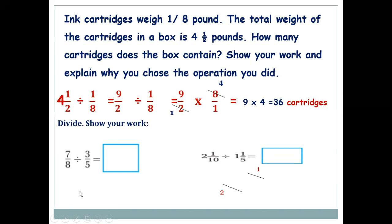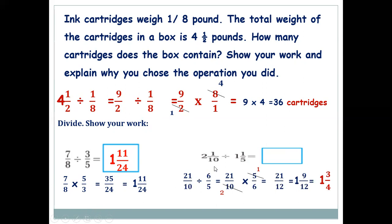Next: divide 7/8 ÷ 3/5. Use the reciprocal: 7/8 × 5/3 = 35/24. Nothing simplifies, so convert to a mixed number: 1 and 11/24. Next division of mixed numbers: 2⅒ ÷ 1⅕. Convert: 2⅒ = 21/10, 1⅕ = 6/5. Then 21/10 × 5/6 — simplify 5 and 10 by 5: 5 ÷ 5 = 1, 10 ÷ 5 = 2. Result: 21/12 = 1 and 9/12, simplified by 3 = 1 and 3/4.